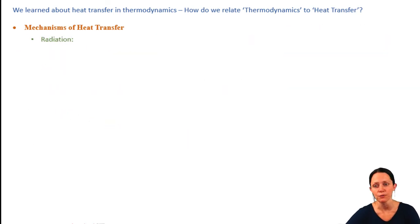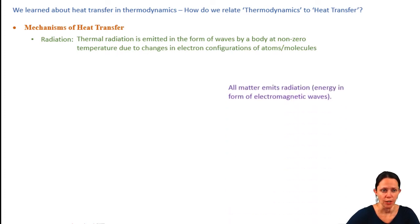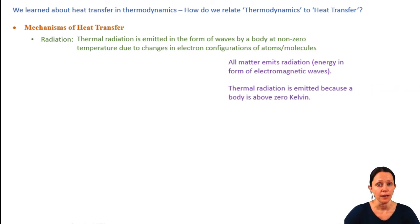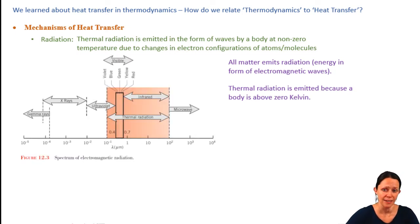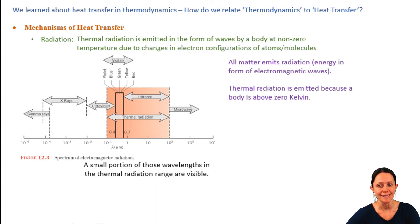The last mode of heat transfer is radiation, emitted in the form of electromagnetic waves — or you can think of it as packets of energy or particles. All matter emits radiation. Thermal radiation is emitted because a body is above absolute zero. On the electromagnetic spectrum, the range of wavelengths for thermal radiation is anywhere between 0.1 microns and 100 microns, and within that span, between about 0.4 and 0.7 microns is the visible region.